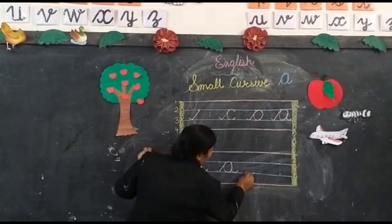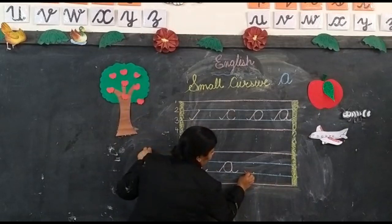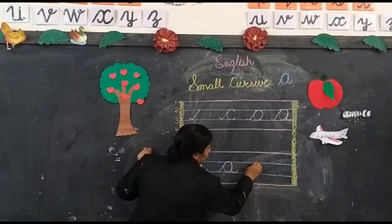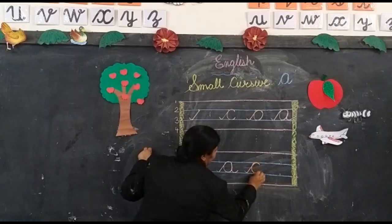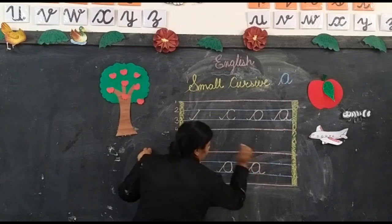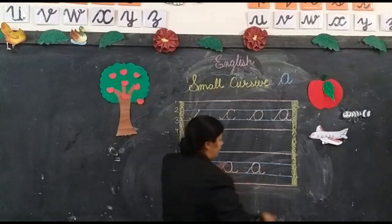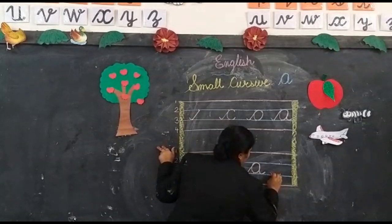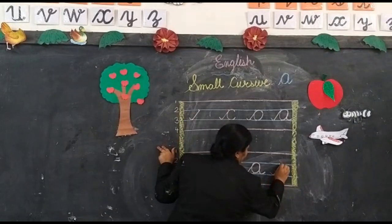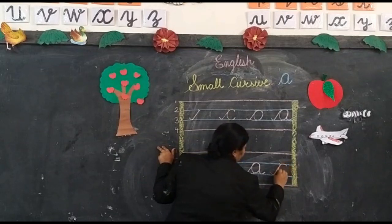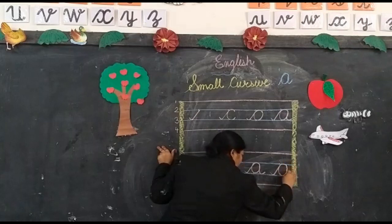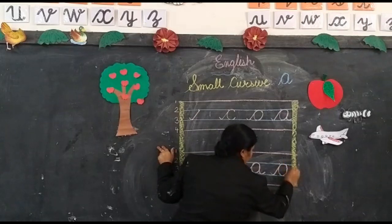So first we make a curve, go up, slanting line, semicircle, circle, come down, make a curve and go forward. And last curve, go up, slanting line, semicircle, circle, come down, make a curve and go forward.